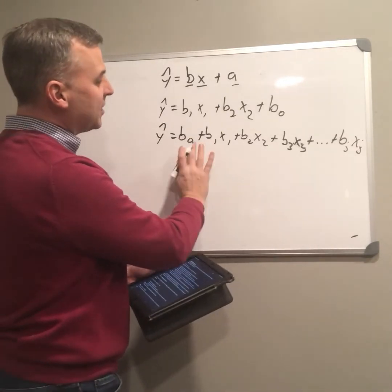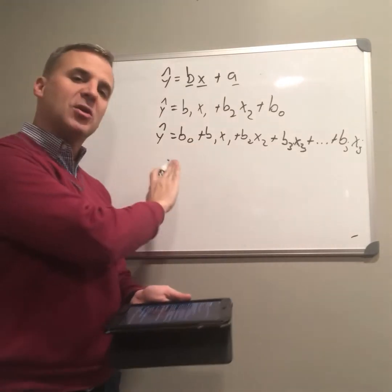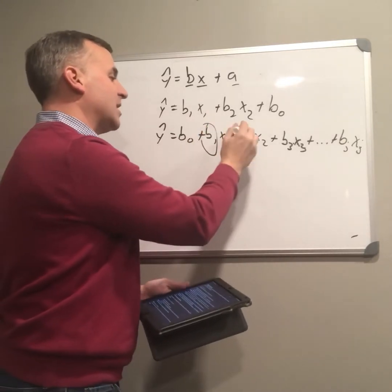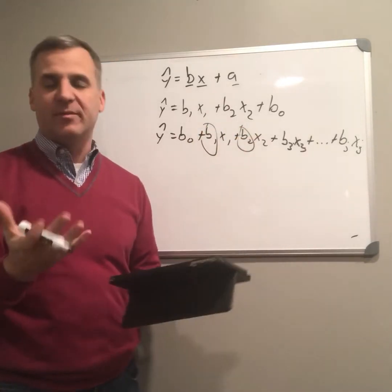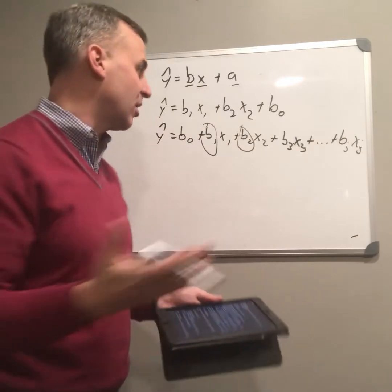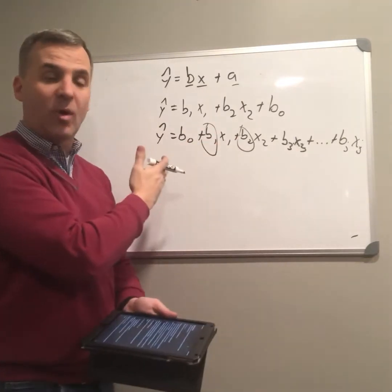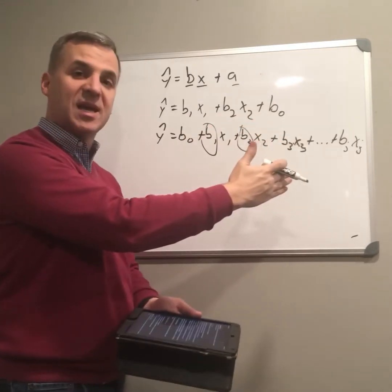And we can kind of start thinking of these as weights. So we often hear these called regression weights, the weight associated with each predictor. Because there's kind of heaviness, it's kind of the analogy here. A predictor that is more important is more predictive of y. Not all of these will predict in the same way.